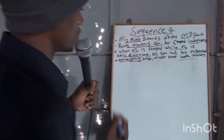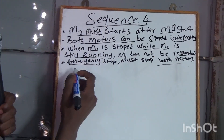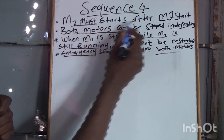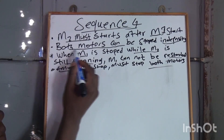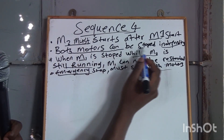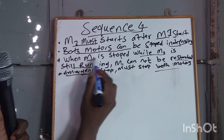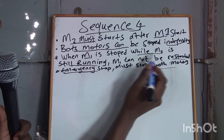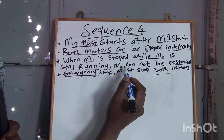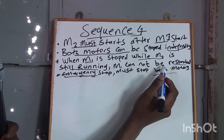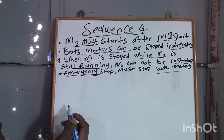So this is our Sequence 4. It says that Motor 2 must start after Motor 1 has started. Then both motors can be stopped independently. When Motor 1 is stopped while Motor 2 is running, Motor 1 cannot be restarted.